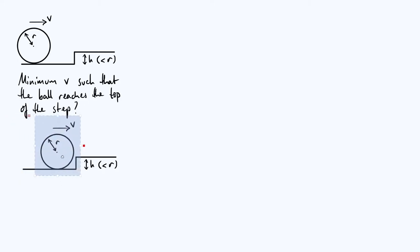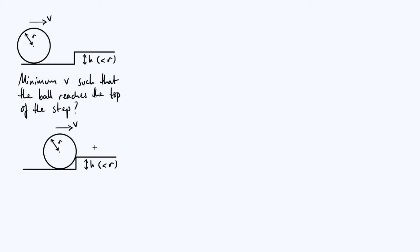I'm going to move the ball over to the right so that it's in the position where it just first comes into contact with the step, because before that point the dynamical state of the ball is not going to be changing. We know it's moving to the right with a velocity of v, and if it's rolling without slipping it must also have some angular velocity about its own center of mass. I'm going to denote that initial angular velocity as lowercase omega.